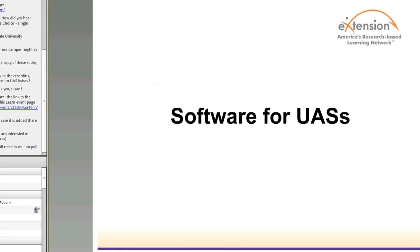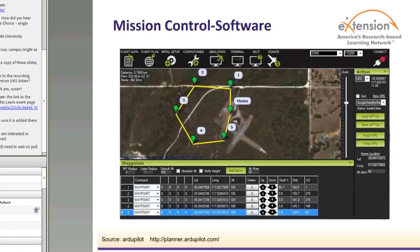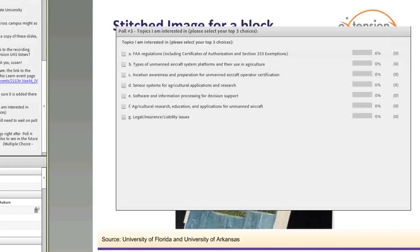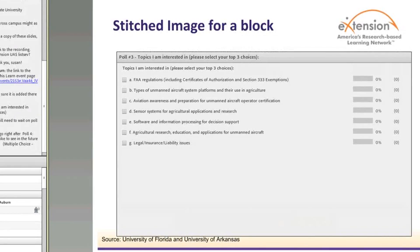Finally, when discussing software for unmanned aircraft systems, it essentially means selecting software for mission planning and for processing images. Images come in several small-sized footprints that need to be stitched together, and several factors must be taken into consideration for mission planning and obtaining a clear image of an entire field. In conclusion, this webinar series needs your contributions and suggestions for bringing new and relevant content to viewers. I encourage you to come forward with your ideas and suggestions through emails to our team.